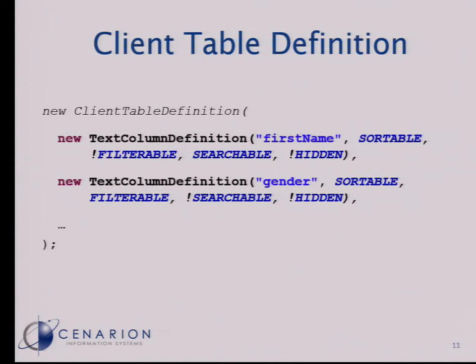We have a kind of table definition for the client side, which is not more than that. We have the technical field name so we can match client and server side. Then we define the sortable, filterable, and searchable columns. We also have hidden columns — those allow us to transport data to the client that the user shouldn't see, but maybe we want to use in some user action, like additional IDs we want to act on when the user clicks a table row.